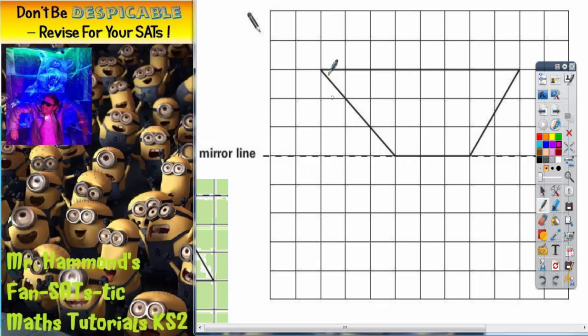Method number two involves taking each corner one at a time, counting the gap of squares, the number of squares to the mirror line and then repeating that same distance on the other side to get the corresponding corner in the reflection.